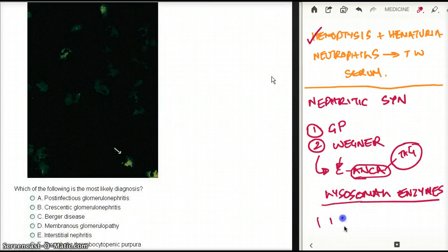Now let's look at the options. Post-infectious glomerulonephritis - that's not the answer. Crescentic glomerulonephritis - Wegener does give crescents, so that's possibly the answer. Berger disease - no, it's not Berger disease. Berger disease is IgA nephropathy. This has nothing to do with IgA nephropathy, so that's ruled out.